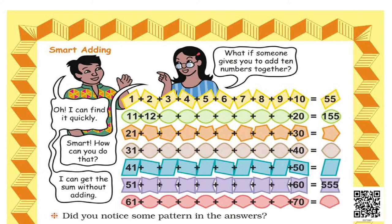Students, let us now discuss about smart adding as given in your book. What if someone gives you to add 10 numbers together? In the first case, the addition is from 1 to 10 and it gives us 55. In the second case, it starts with 11 and ends with 20: 11 plus 12 plus 13 ... plus 20 gives us 155. Going down, we find that 51 to 60 gives us 555. Can you fill the blanks now? I hope so.